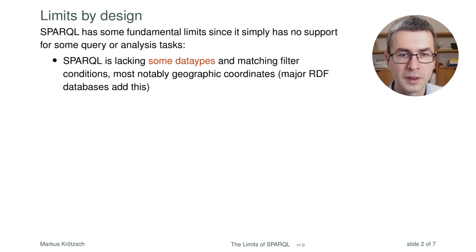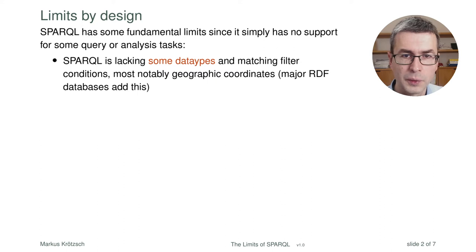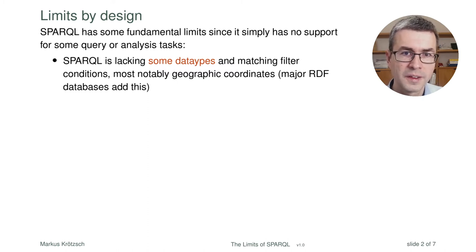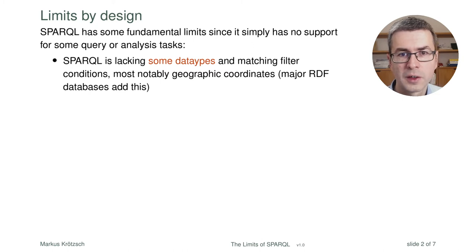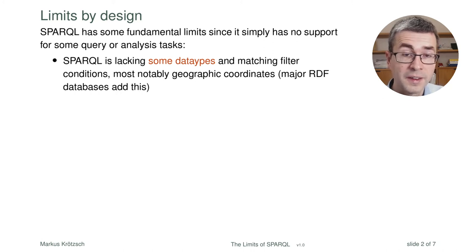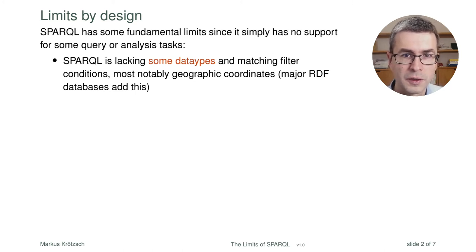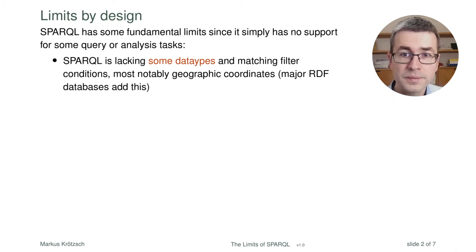The solutions adopted for geographic data are not part of the standard, so they differ from system to system. If someone uses features for geographic information system queries, they will often have to rephrase their queries when moving to another SPARQL processor. For example, in Blazegraph — used in the Wikidata examples — there are geographic features realized through the SERVICE keyword that allow you to find coordinates close to a specified location. But with RDF alone it would be very difficult, if possible at all.